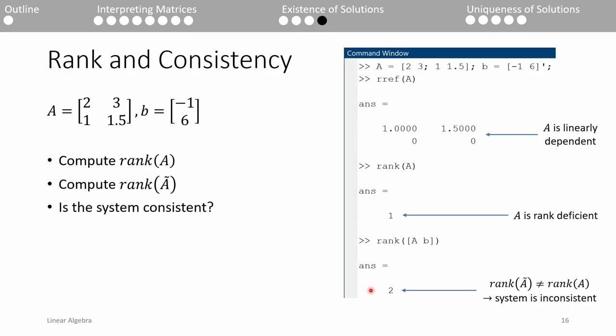Here's another example. This system is the linearly dependent system from slide 13, so we know there can't be any solutions. Let's verify this in MATLAB. After row-reducing, it's evident that column 2 is 1.5 times column 1, so we know that the columns of A are linearly dependent, as previously confirmed. This means that the rank of A is only 1. The rank of A tilde is also 2, so the two ranks are unequal and the system is inconsistent. Geometrically, this means we can never form this specific B vector.